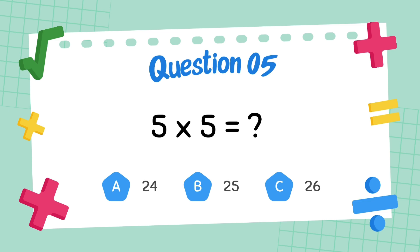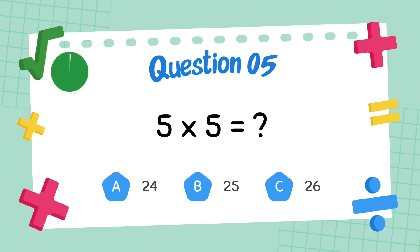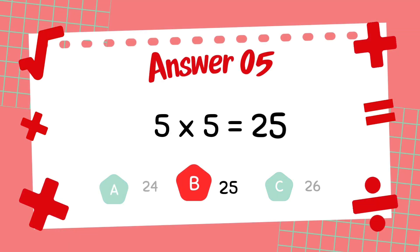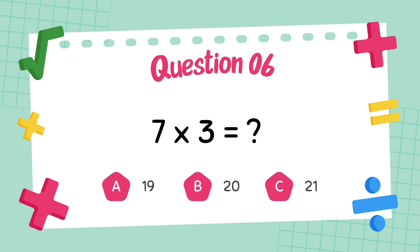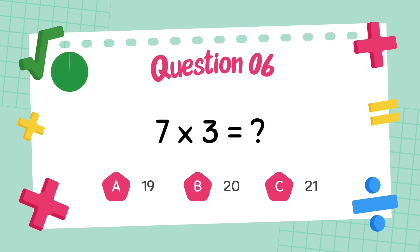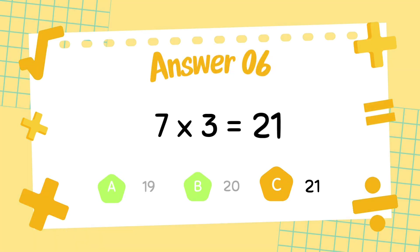What is 5 multiply 5? The answer is 25. What is 7 multiply 3? The answer is 21.